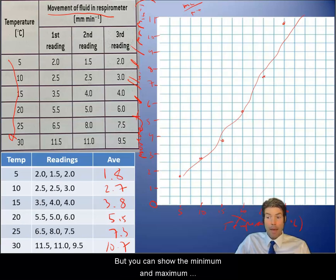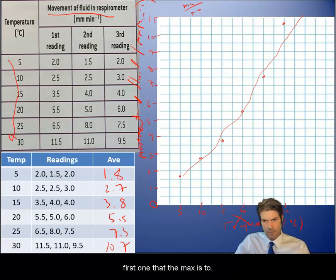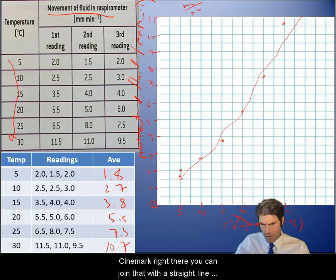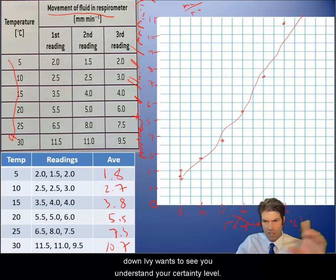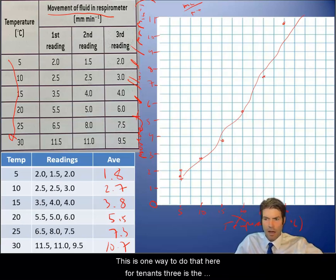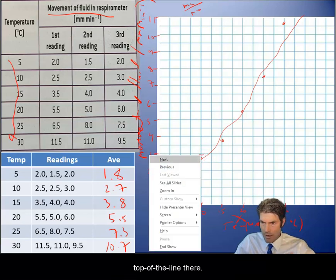Now I want to show you error bars. You can show the minimum and maximum - usually standard deviation, but min-max is fine. This first one, the max is two, so you put a little mark there. The minimum is 1.5, put a mark right there. You can join that with a straight line down. IB wants to see you understand the uncertainty levels.